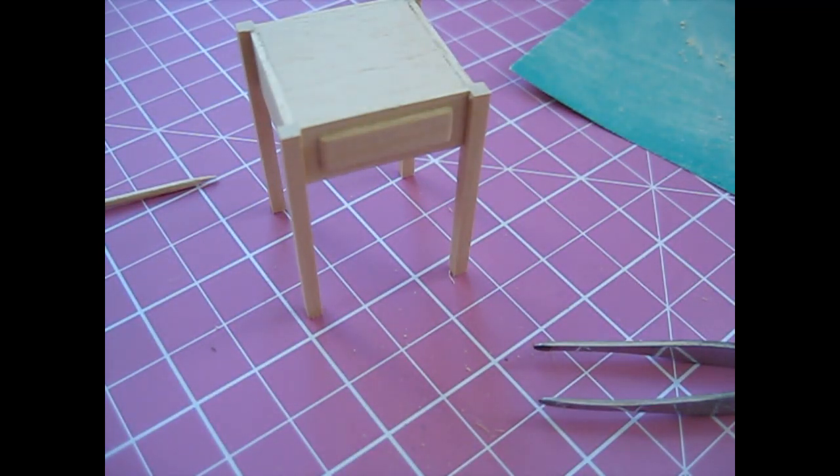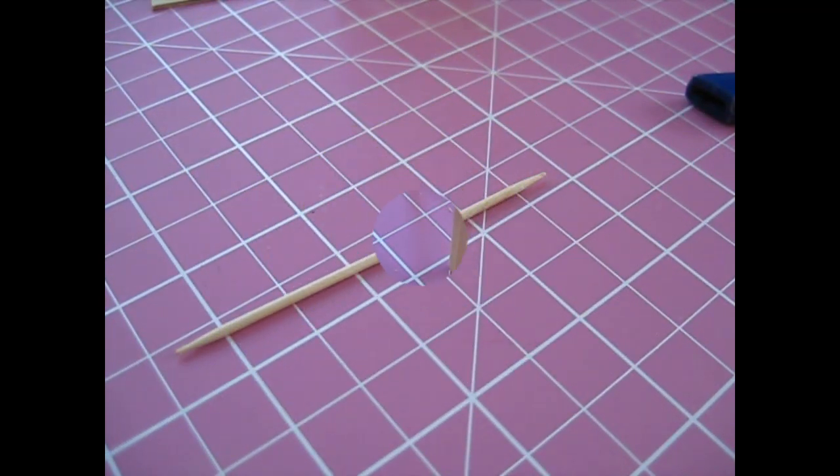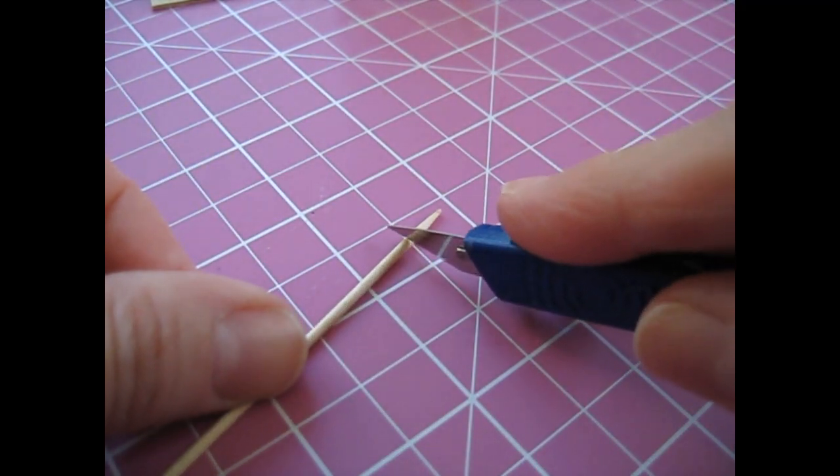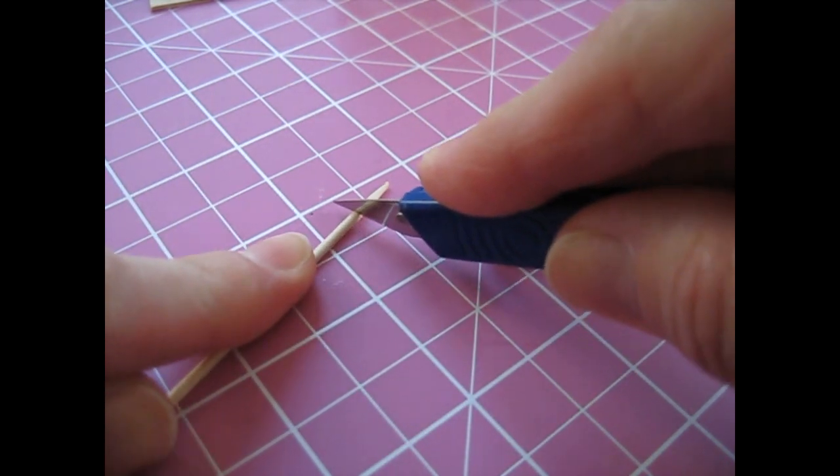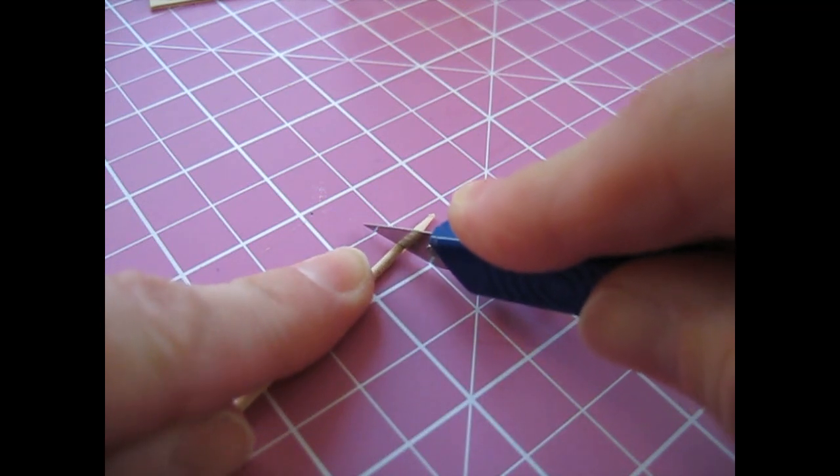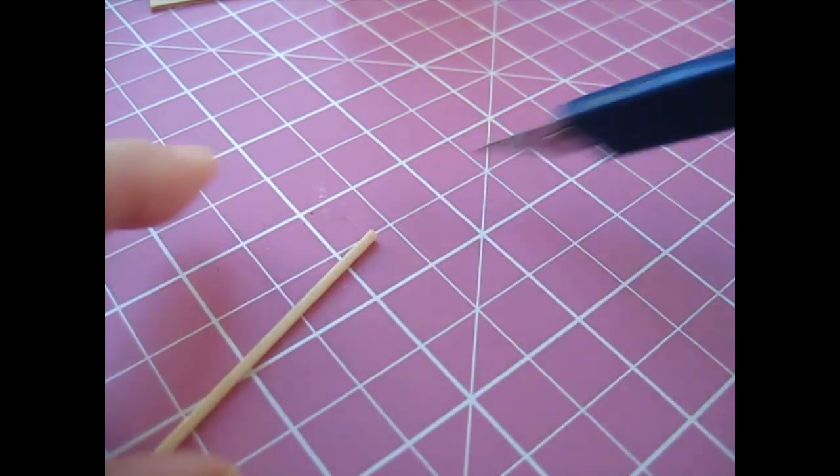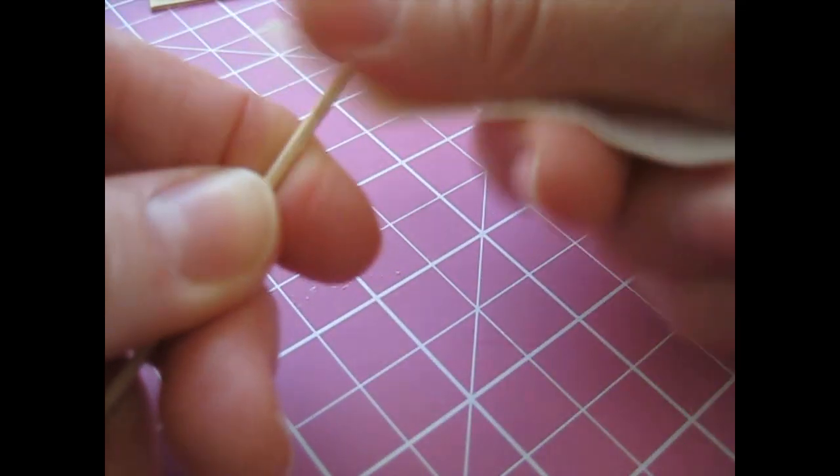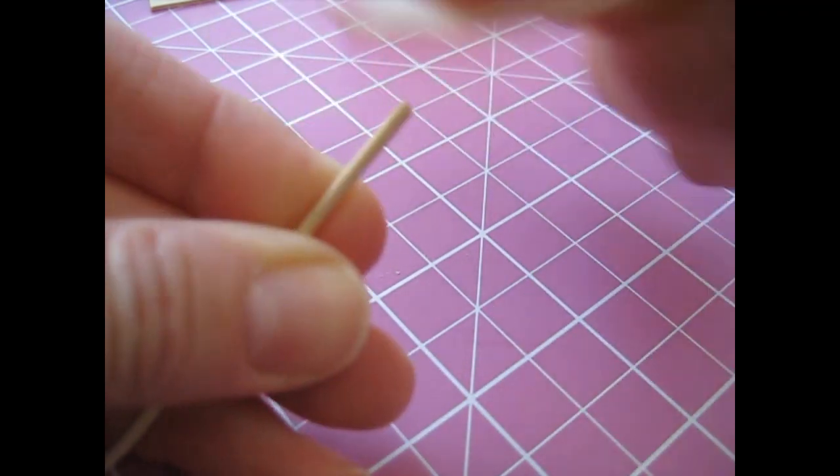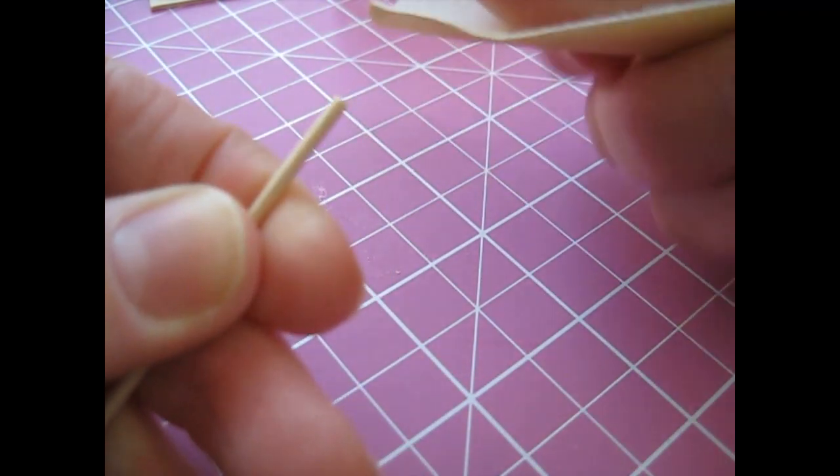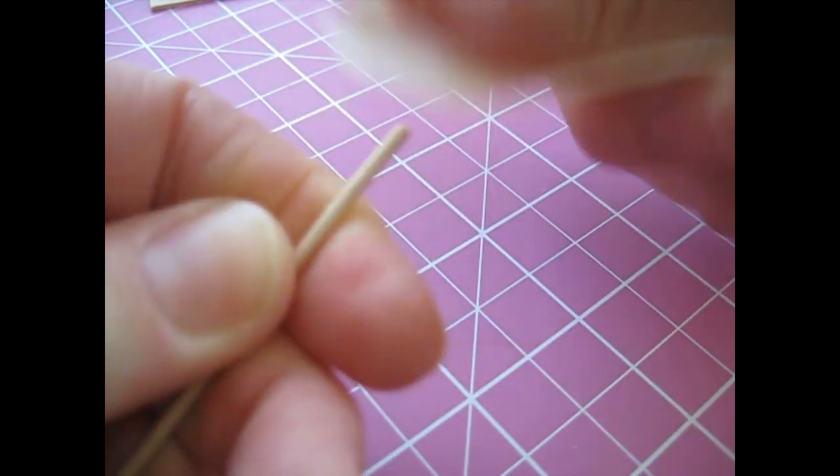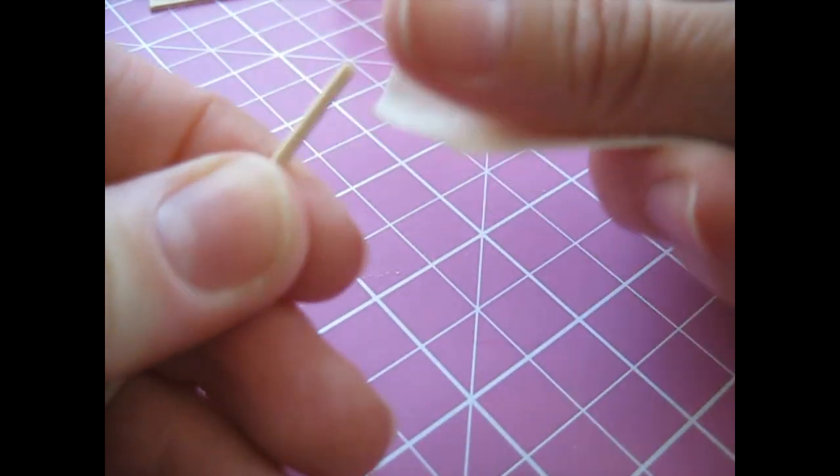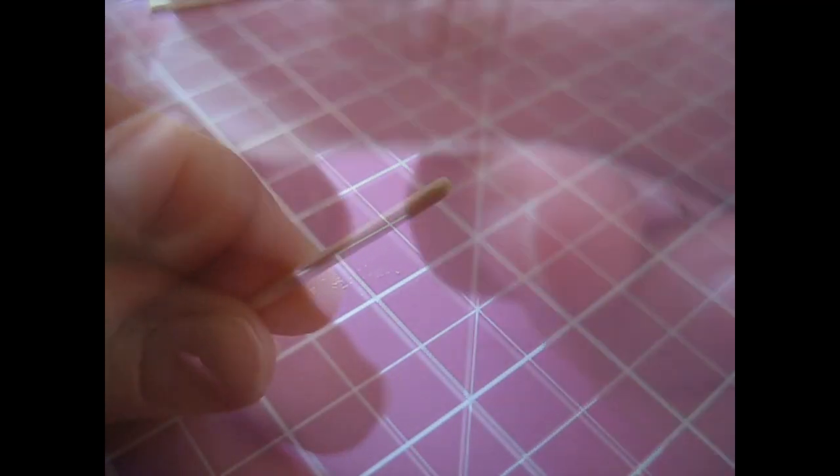Now we can make our draw knob. To do that we're going to use a cocktail stick. Begin by cutting off the pointed end. It makes it easier if you roll it along your work surface as you do that. Then bring in fine grade sandpaper and we're just going to round over the cut end. Just sweep your sandpaper over the top, making that into a little draw knob shape.